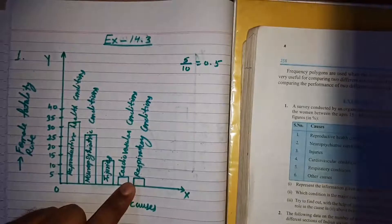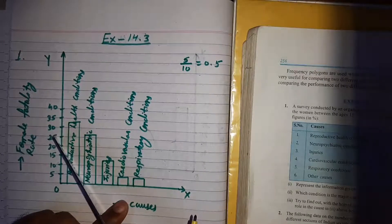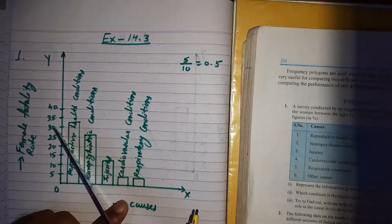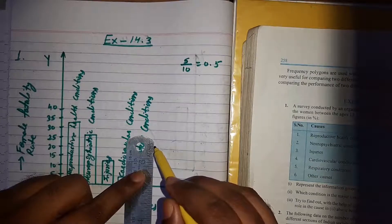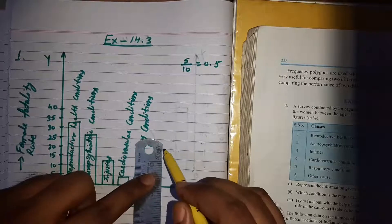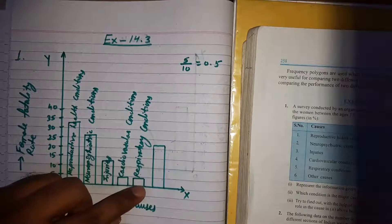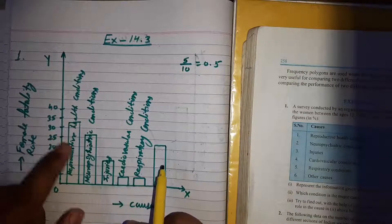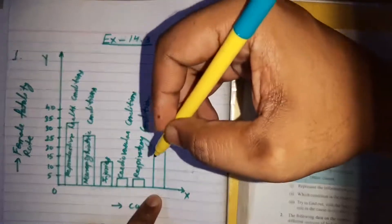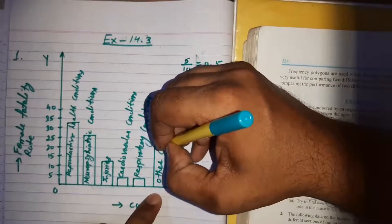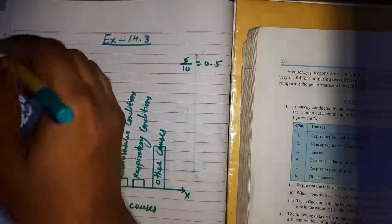The last cause is other causes with frequency 22. It lies between 20 and 25. We cover the 4th line between 20 and 25, giving 22. This completes the bar graph for Question 1, Part 1.